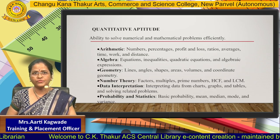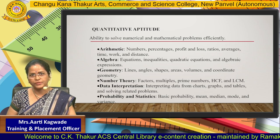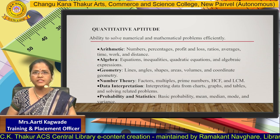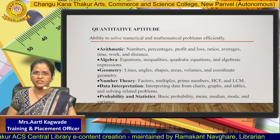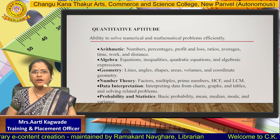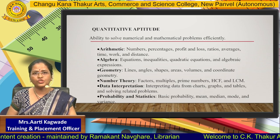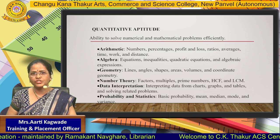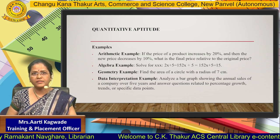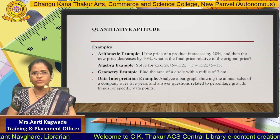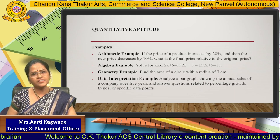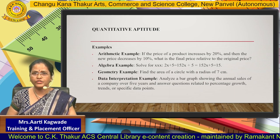The last section is quantitative aptitude, where your ability to solve numerical sums efficiently is judged. There will be various types of examples, right from arithmetic, algebra, geometry, data interpretation, and probability or statistics. Students need not worry — these questions are only from your 8th, 9th, and 10th standard course or curriculum.